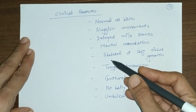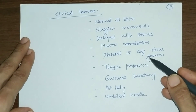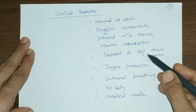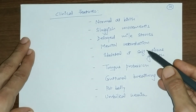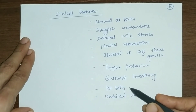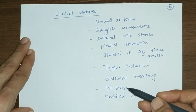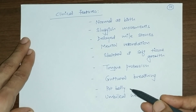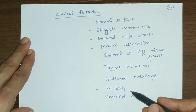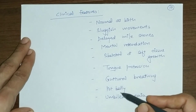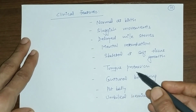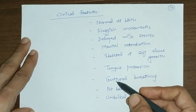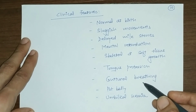There is retardation of skeletal and soft tissue growth, with skeletal growth retardation being greater than soft tissue retardation. This is why the cretin child has a pot belly — the height is stunted but soft tissues like the spleen, liver, and intestine are normal, causing protruded abdomen and sometimes umbilical hernia. Due to skeletal growth retardation, the tongue is protruded and the child has guttural breathing as the tongue obstructs the respiratory tract.